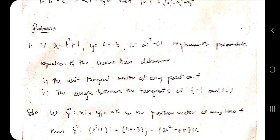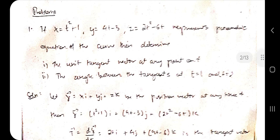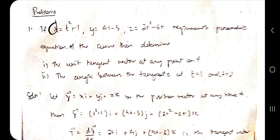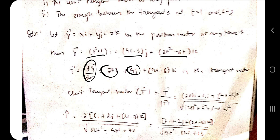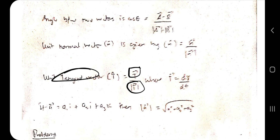In exams, you'll be given x, y, z as parametric functions of t. To find the unit tangent vector, write the position vector r = xi + yj + zk, substitute the given parametric expressions, then differentiate with respect to t to get the tangent vector. The unit tangent vector is this tangent vector divided by its magnitude.